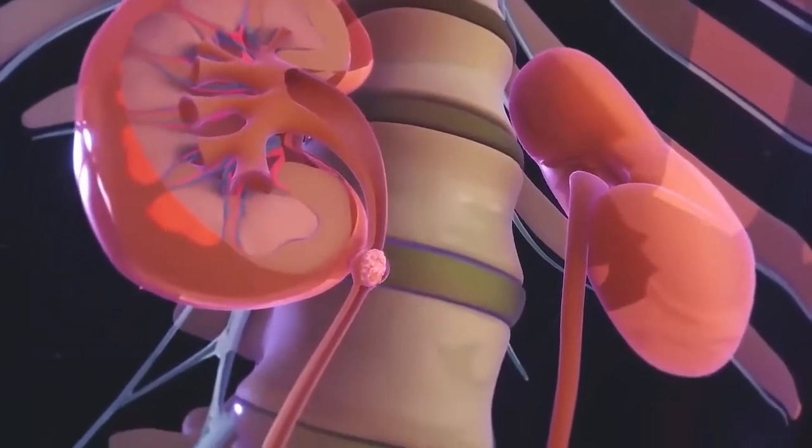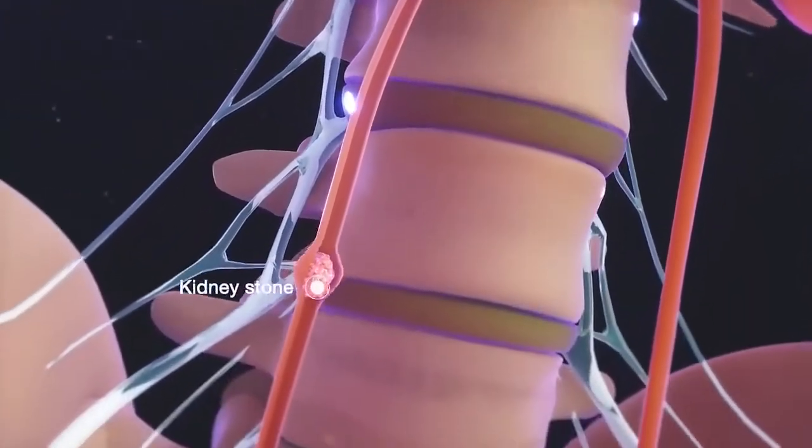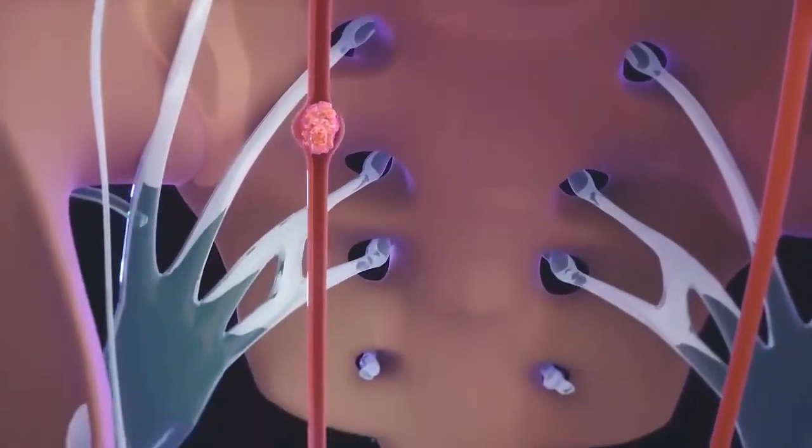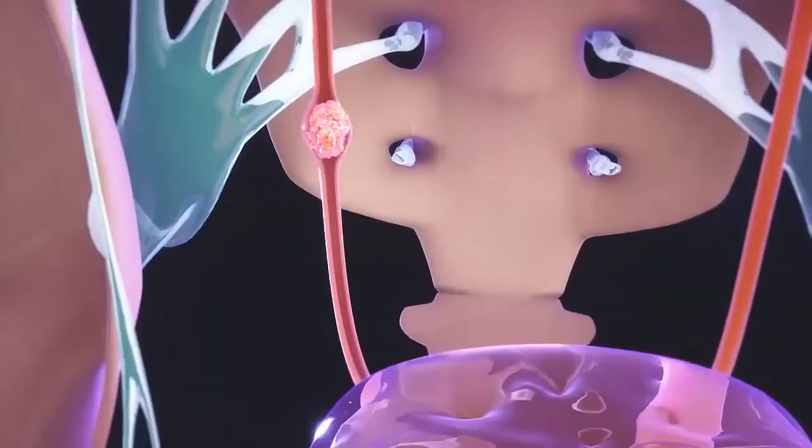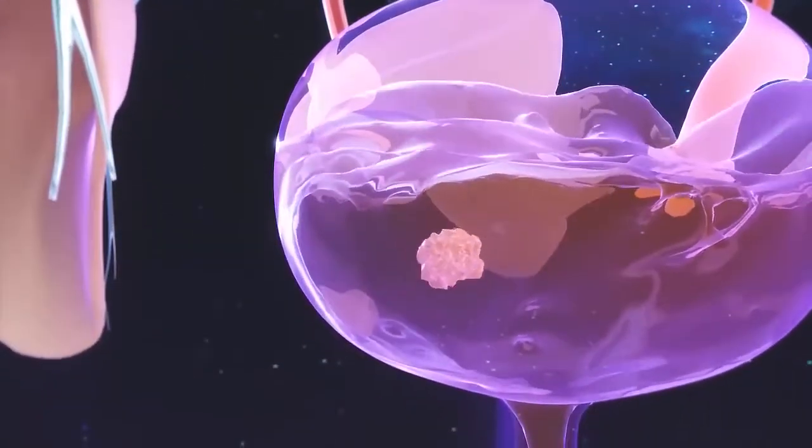The kidneys and urinary tract can be affected by many different disorders. Stones are hard masses, usually composed of calcium, that begin to form in the kidney and may enlarge throughout the urinary tract, causing pain, bleeding, or infection. They are more common in older adults and men.